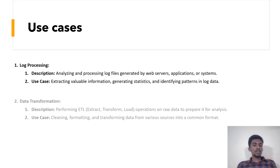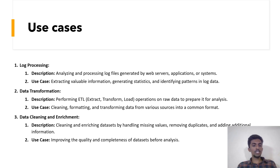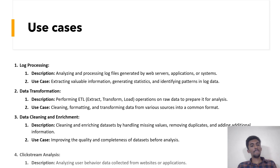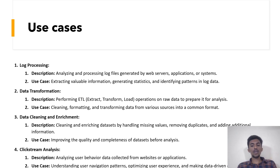The use cases of Apache Pig are: log processing, data transformation, and data cleaning and enrichment. Log processing means analyzing and processing log files generated by web servers, applications, or systems — extracting valuable information, generating statistics, and identifying patterns in log data. For data transformation, we perform ETL operations on raw data to prepare it for analysis — cleaning, formatting, and transforming data from various sources into a common format. For data cleaning and enrichment, we clean and enrich data sets by handling missing values, removing duplicates, and adding additional information, improving the quality and completeness of data sets before analysis. There is also clickstream analysis — analyzing user behavior data collected from websites or applications, understanding user navigation patterns, optimizing user experience, and making data-driven decisions.